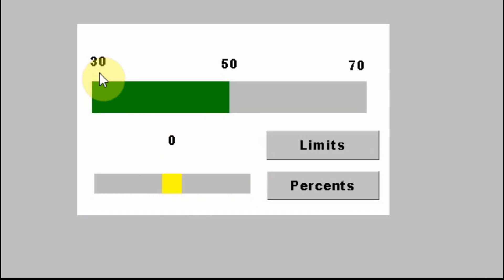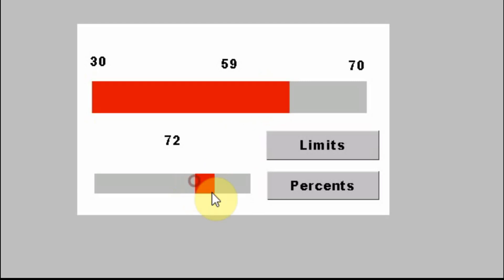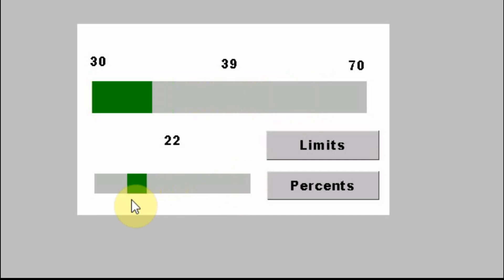The limits here are 30 and 70 — I just picked those numbers arbitrarily. When you start up the display it just starts right in the middle. As the input goes up it increases. This shows the current percentage of the progress bar that's filled. Right now it's 65% full and it's yellow, so it's in a warning state. When it hits a certain level it turns red, and when it goes down to a certain level it turns green. I've made it so you can adjust the limits and the percentages where the colors change.